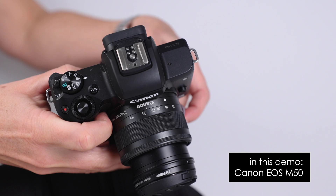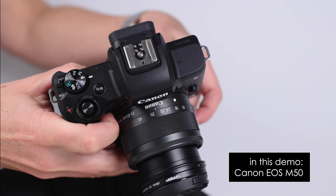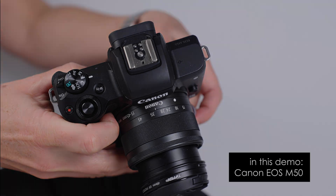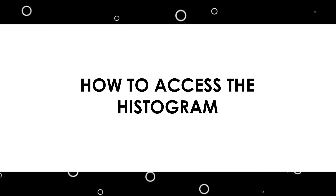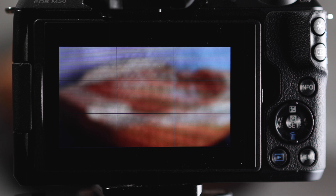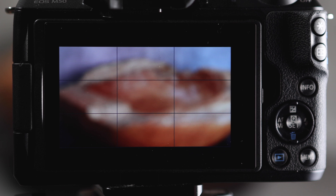Let's start at the beginning. For this demo, I'm using my Canon M50, but if you have a different camera, you can access the histogram in a similar manner. To bring up the histogram on the Canon M50, hit the info button here until it brings it up.